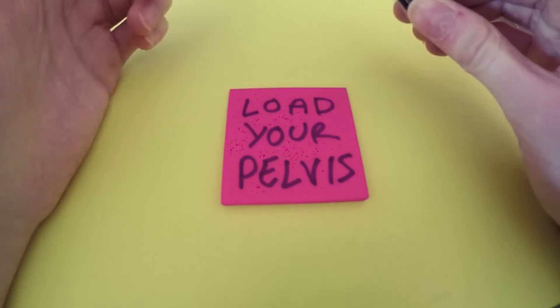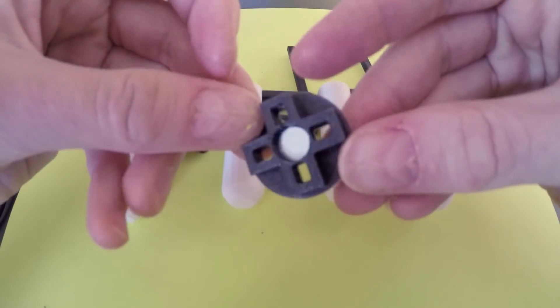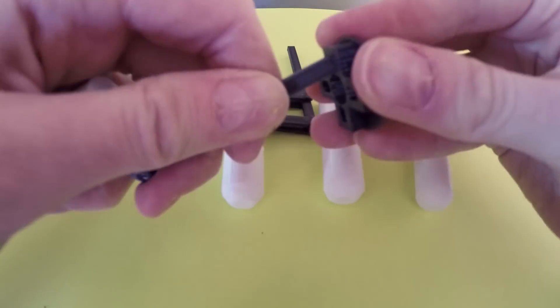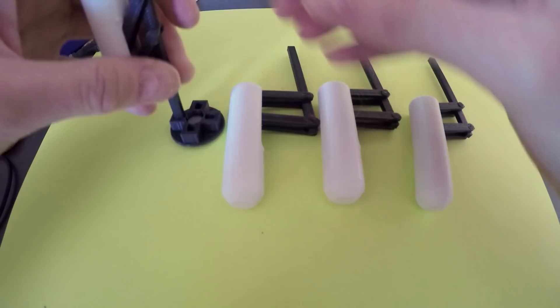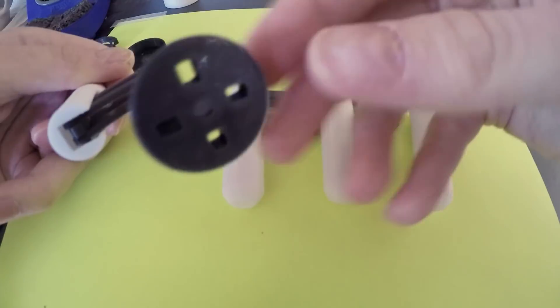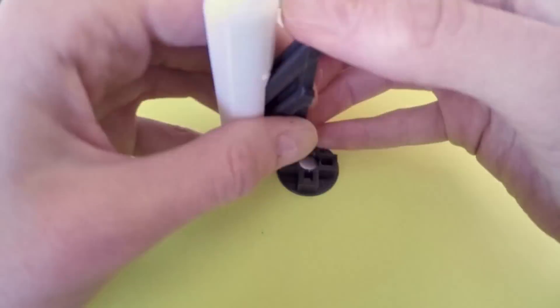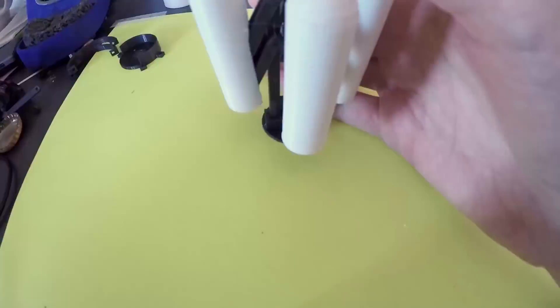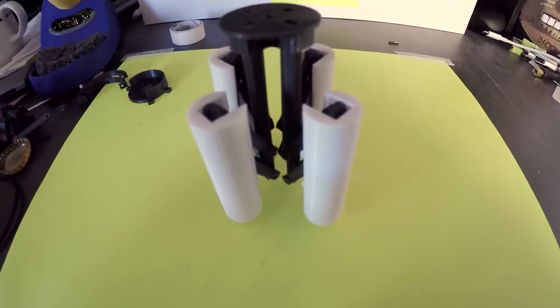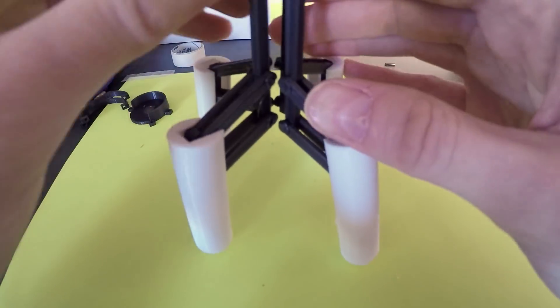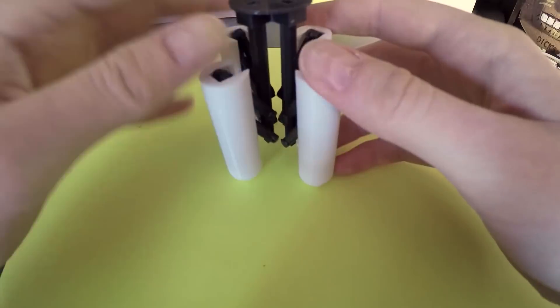It's time to load the pelvis with the noodle legs. Take one of the legs and locate the end of the femur. Press this end into the holes of the pelvis as deep as you can. Now that the legs are attached to the noodle pelvis, you can stand the baby up. Alright, you're almost done.